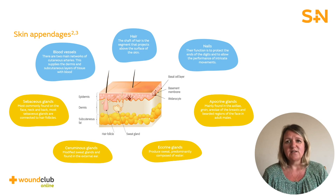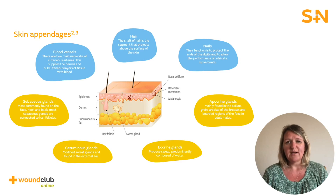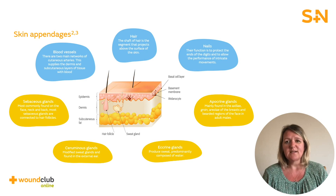Sebaceous glands are connected to hair follicles and are found on the face, neck and back. They secrete sebum, an oily substance that covers the surface of the hairs and protects them from becoming brittle and dying. Ceruminous glands are modified sweat glands found in the external ear. Their function is to provide a sticky barrier and, together with the hairs in the external auditory canal, prevent foreign bodies and insects from getting into the ear.